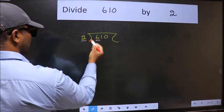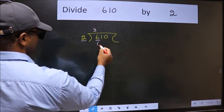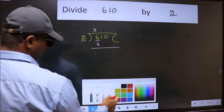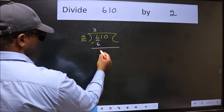When do we get 6 in 2 table? 2 times 3 is 6. Now we should subtract. We get 0.